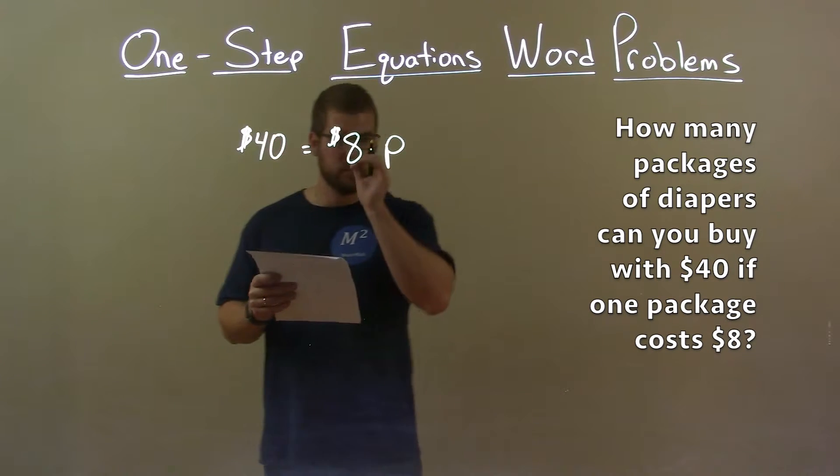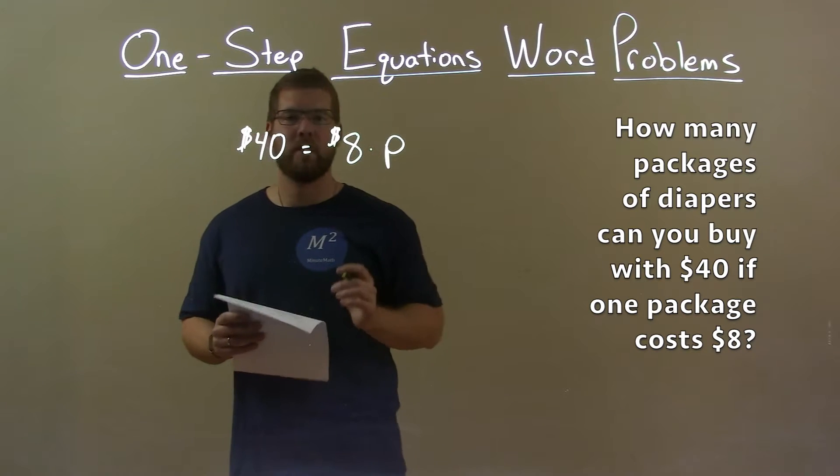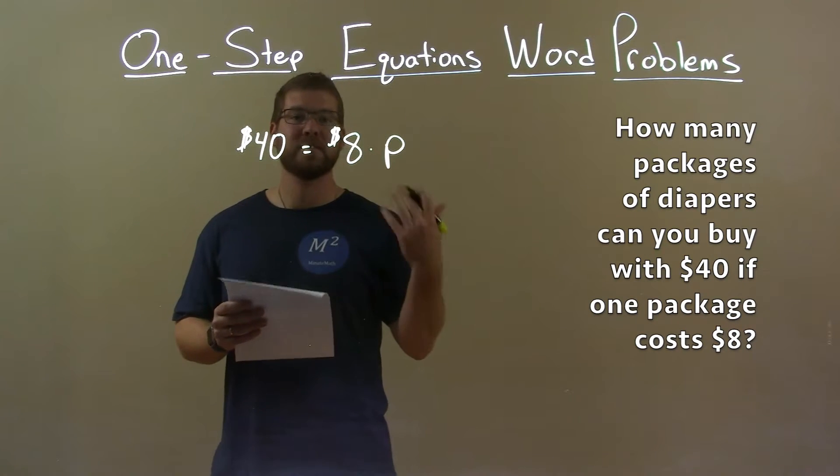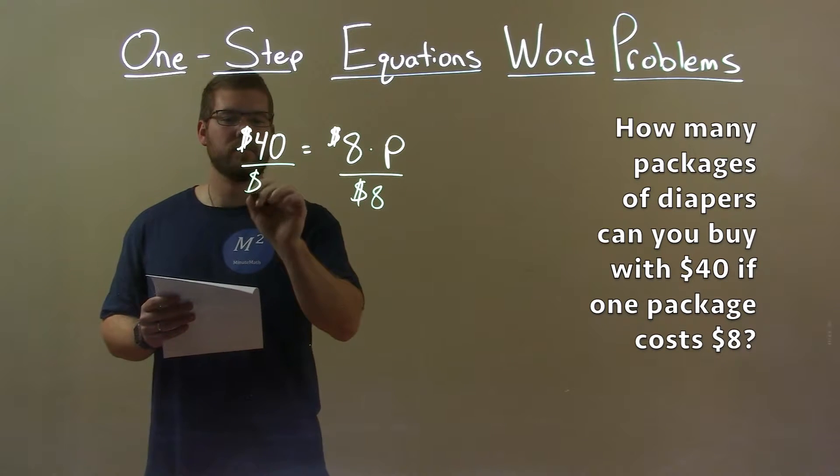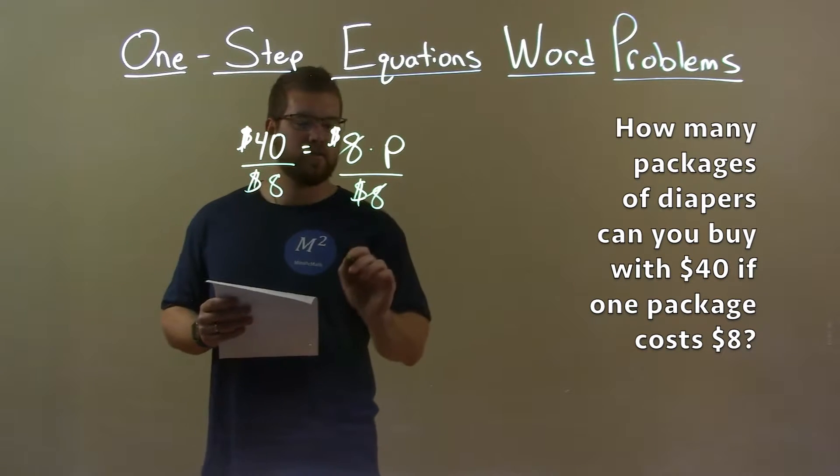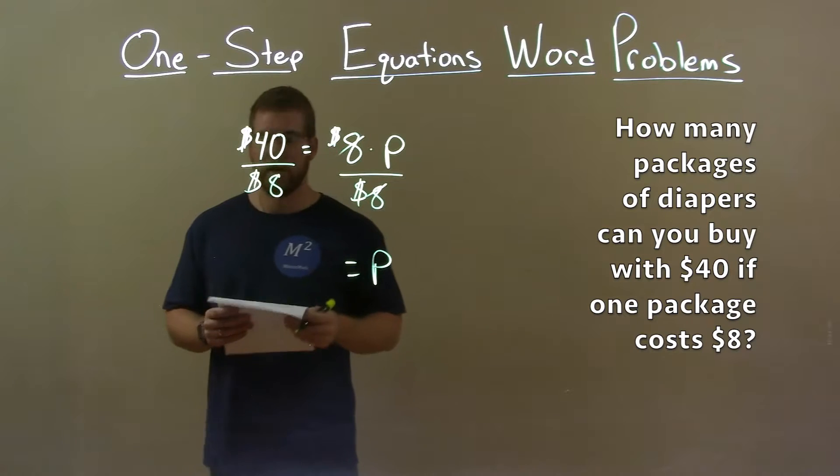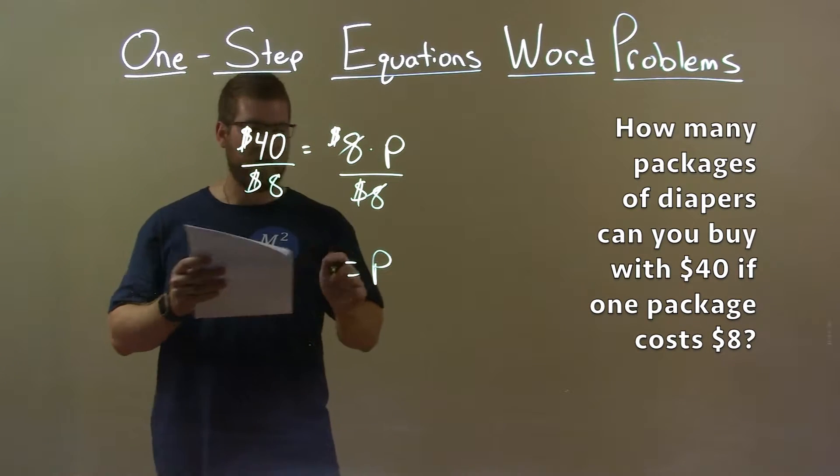Now we want to solve for P. P is being multiplied by 8, so the opposite of multiplication is division. If you divide both sides by $8, on the right the 8's cancel, giving us P by itself. $40 divided by $8 is 5.